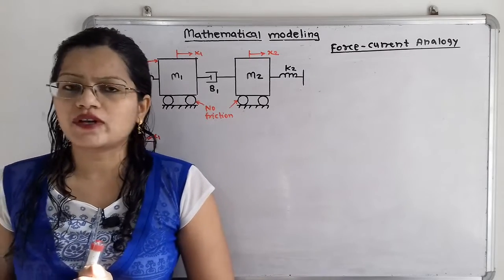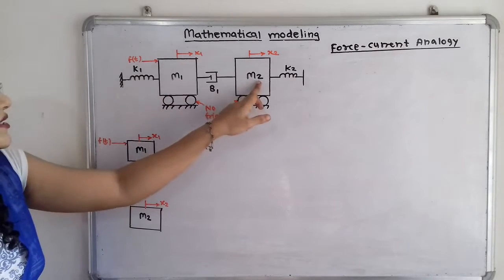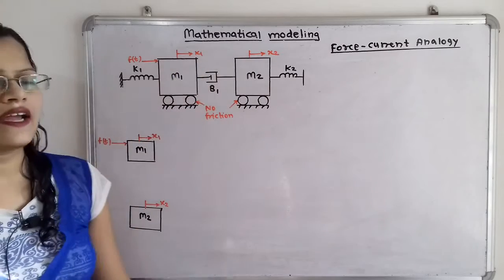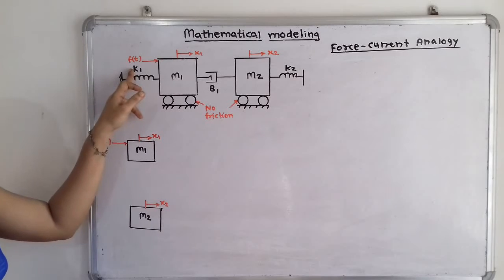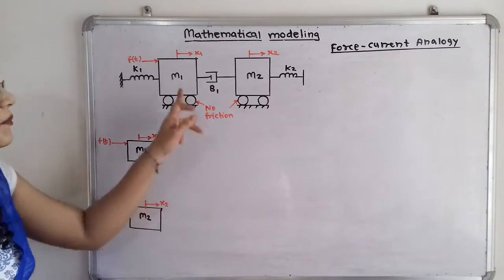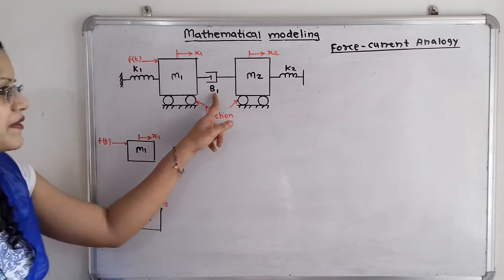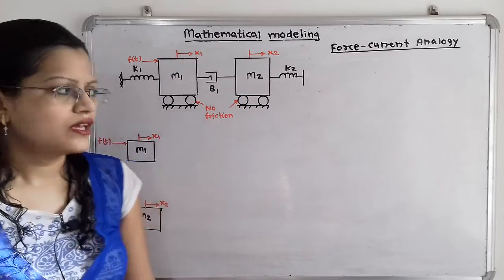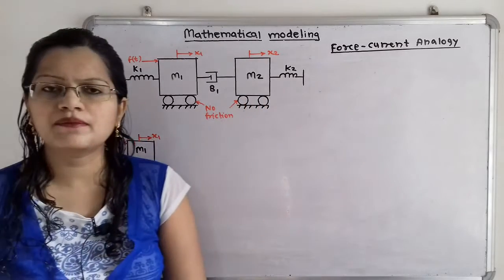Now first we will observe what is the given mechanical system. Here, two masses M1 and M2 have displacement X1 and X2. M1 is connected to a spring with stiffness K1, and applied force F(t) is on mass M1. In between M1 and M2 there is a damper with viscous friction coefficient B1, and M2 is connected to a spring with stiffness K2. For this system, the mass wheels and floor have no friction between them.